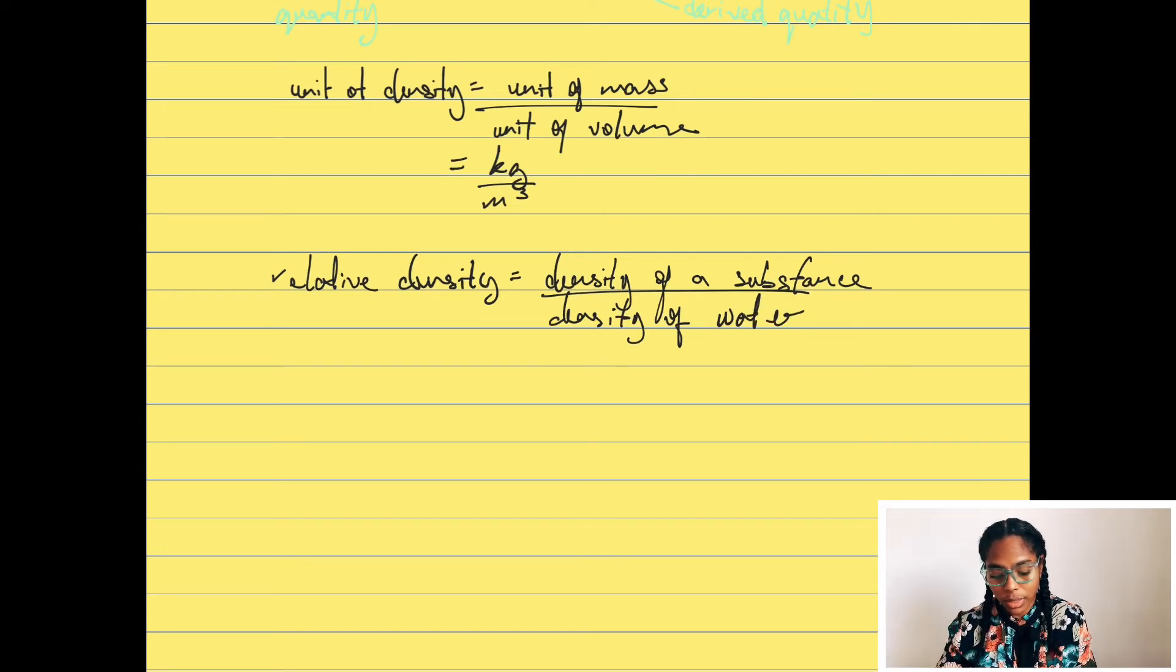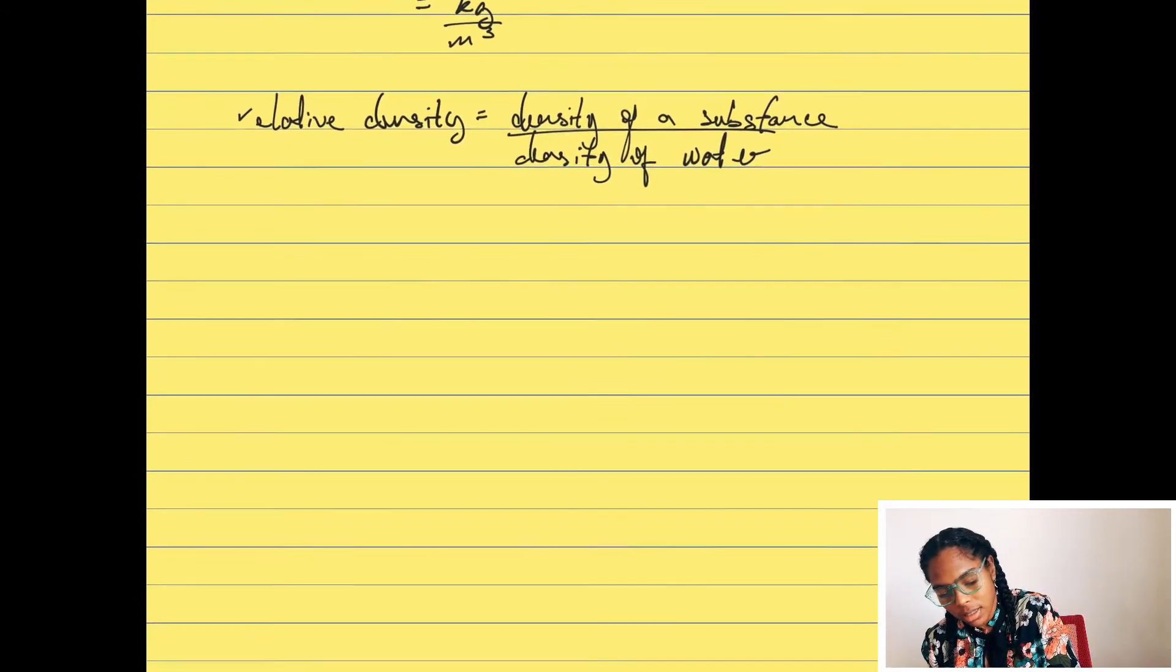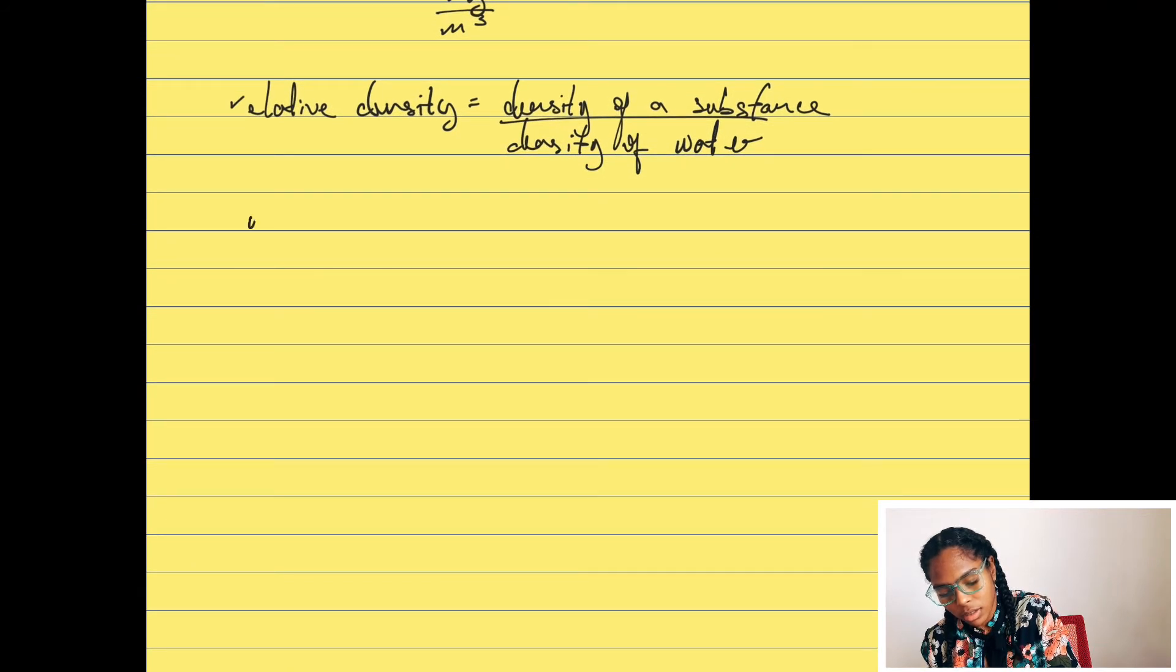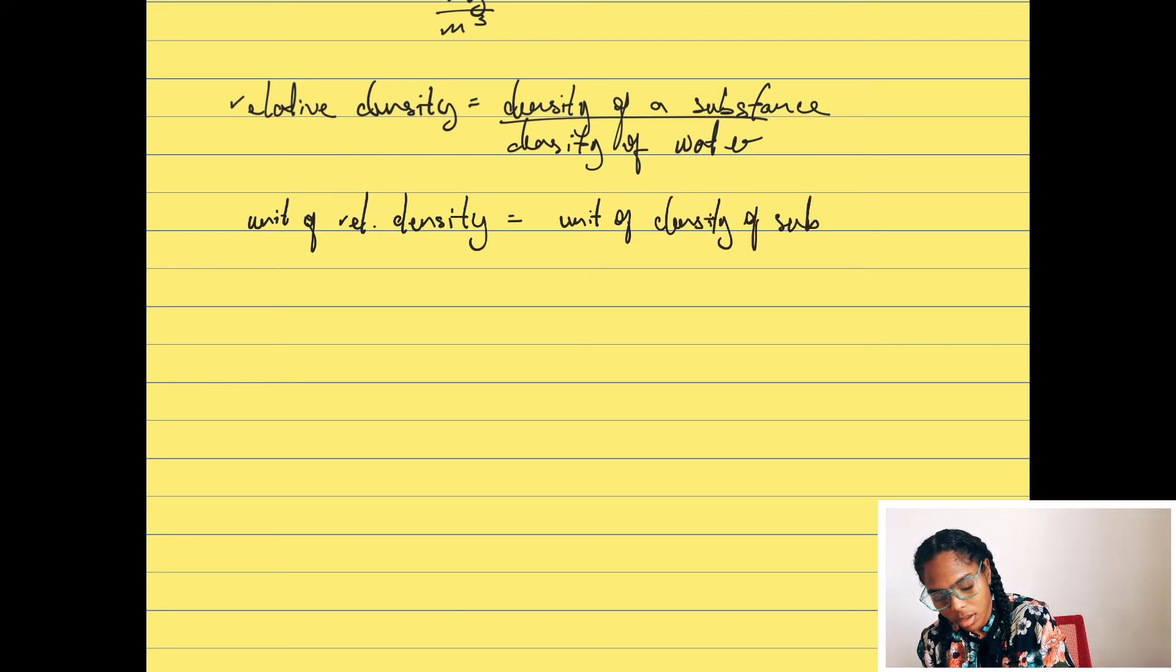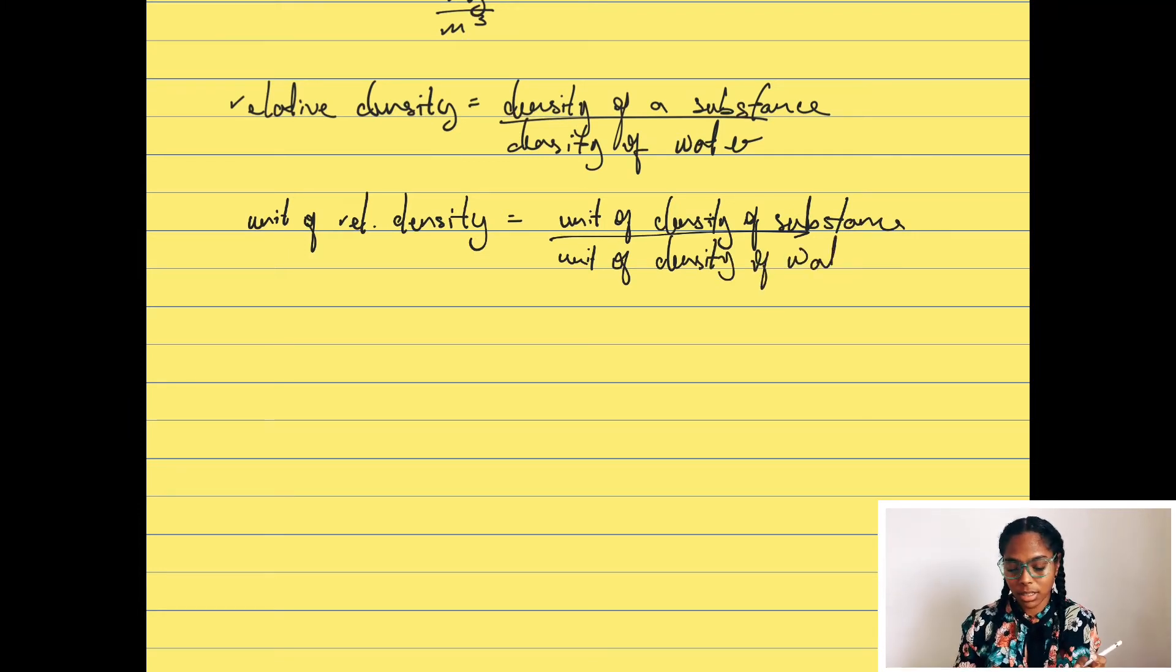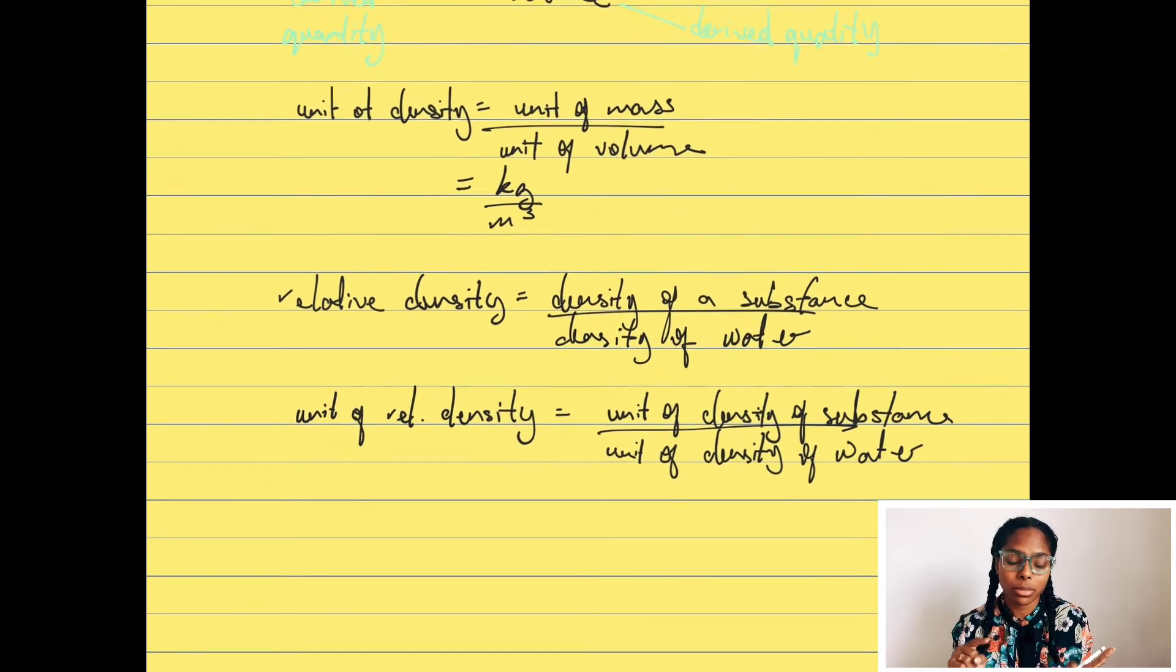So what then would be the unit of relative density? The unit of relative density is equal to the unit of density of the substance over the unit of density of water. Now we just calculated the unit for density and we found that it was kilogram per meter cubed.